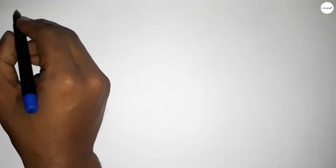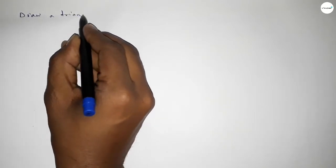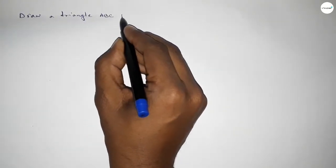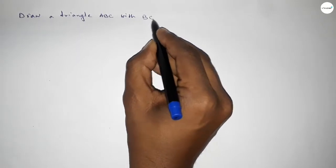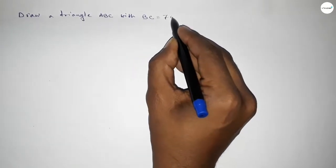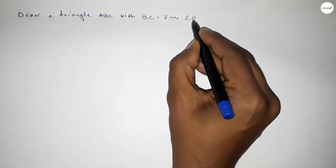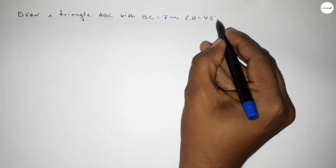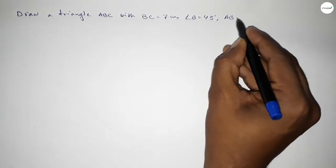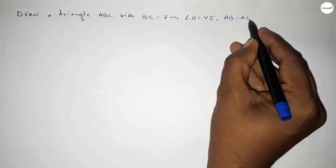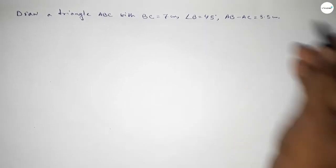Hi everyone, welcome to SI Share Classes. Today in this video we have to draw a triangle ABC with BC equal to 7 centimeters, angle B equal to 45 degrees, and AB minus AC equal to 3.5 centimeters. So let's start the video.